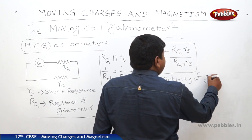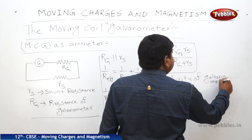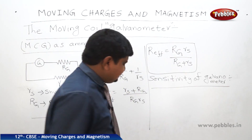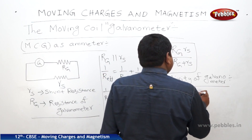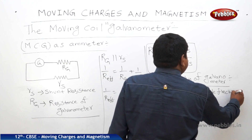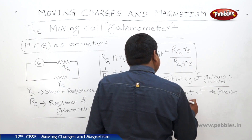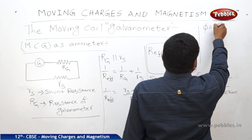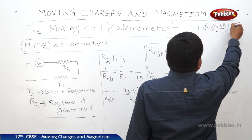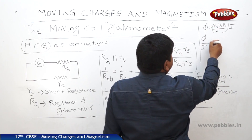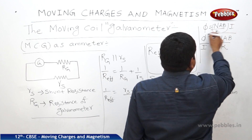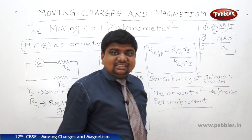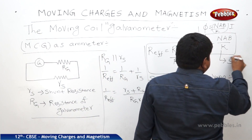Sensitivity of the galvanometer is the amount of deflection per unit current. We know that φ = (NAB/K)·I. Rearranging, φ/I = NAB/K. Deflection divided by current equals NAB/K, and this ratio NAB/K is called the sensitivity of the galvanometer, written as S_G.